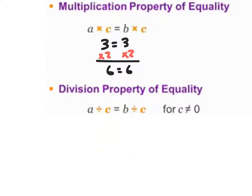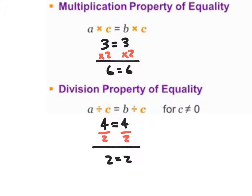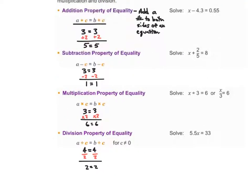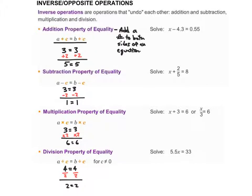Same thing with the division property. Let's do 4 is equal to 4. If we divide each side by 2, we get 2 equals 2. So if you do something to one side of the equation, you have to do it to the other so that the equation stays balanced.